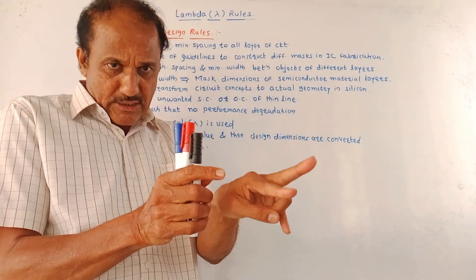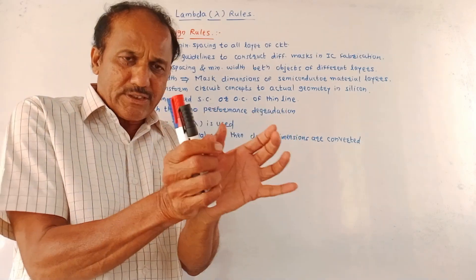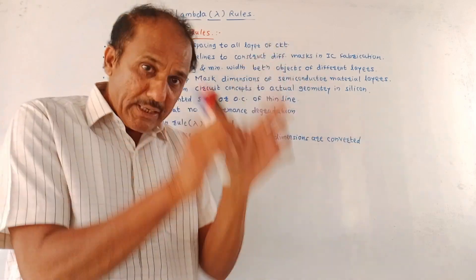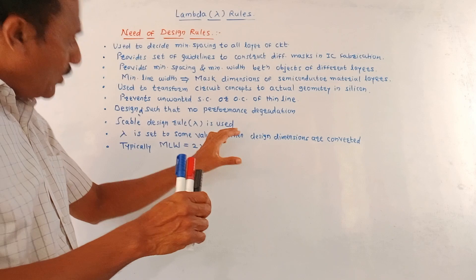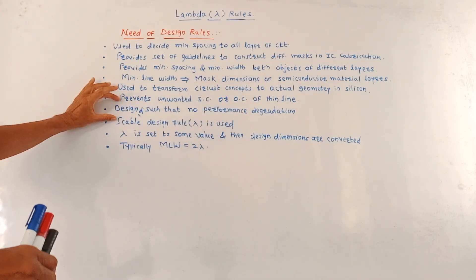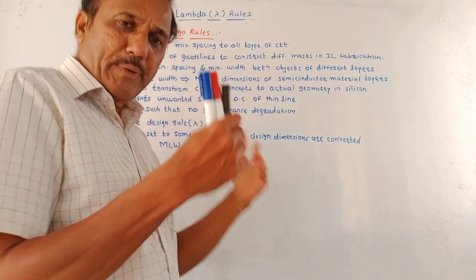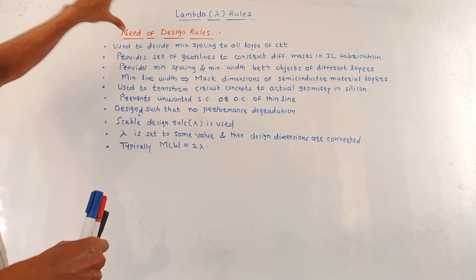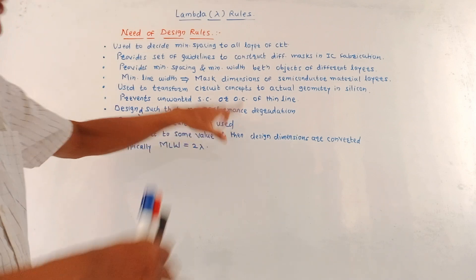If two lines joining different layers are very close to each other with insufficient spacing, a short circuit may occur. But if you use design rules, there will not be any short circuit or open circuit. These rules are designed so there will be no degradation in circuit performance. Especially for this, a scalable design rule — the lambda rule — is used.